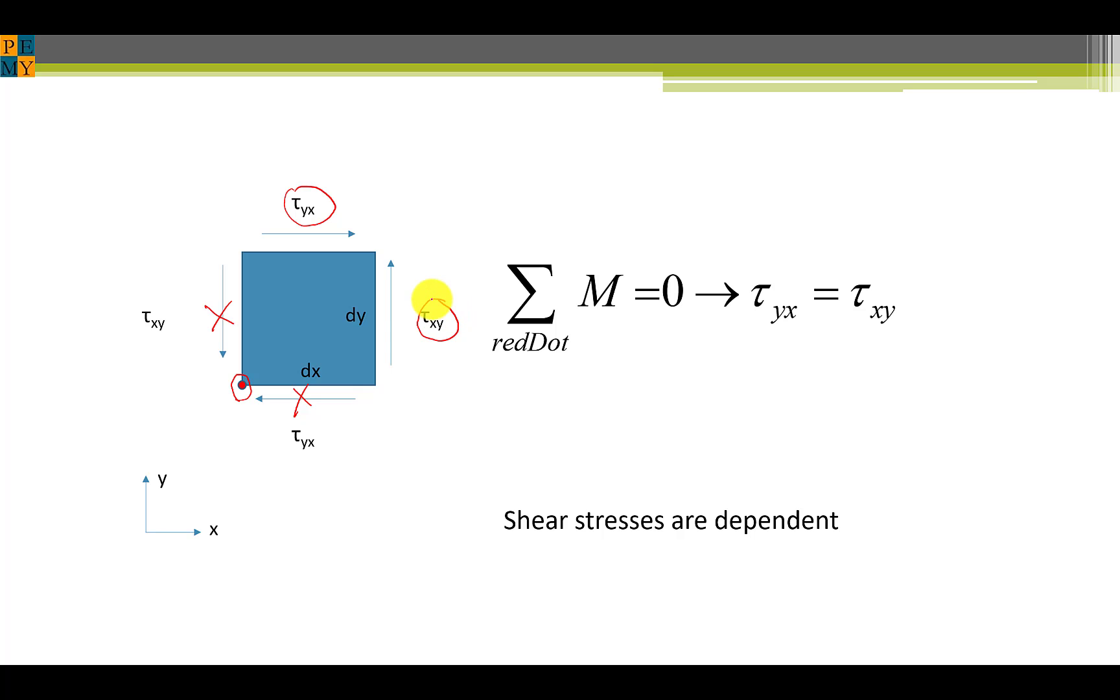This is called the complementary shear stress principle. And this means that shear stresses are not independent, they are dependent. The basic rule is that shear stresses on orthogonal planes, even in three dimensions, are equal.